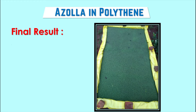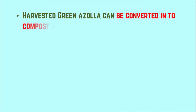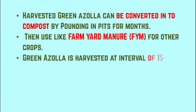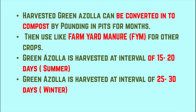The result is that Azolla multiplies rapidly and forms a green mat-like carpet on the water surface in just two weeks. The harvested green Azolla can be converted into compost by ponding in pits for months, then used like farmyard manure (FYM) for other crops. Green Azolla is harvested at intervals of 15 to 20 days in summer and 25 to 30 days in winter.